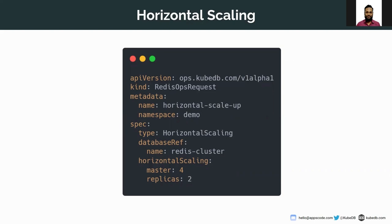The database reference is the Redis cluster. In the horizontal scaling field we can set any master and replica count we want. Here we set four masters and a replica count of two.